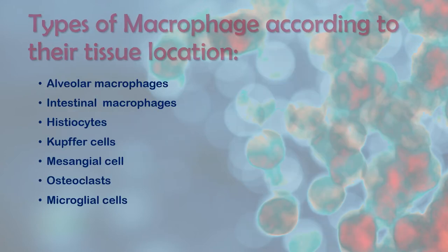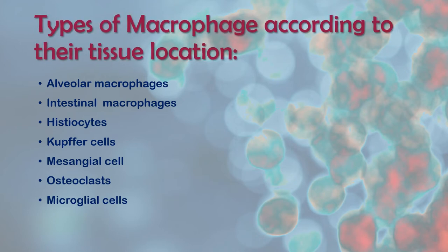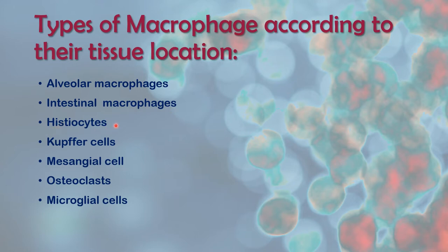There are different types of macrophages present in our body, named according to their tissue location. These types include: alveolar macrophages, present inside the lungs; intestinal macrophages, present inside the gut; histiocytes, present inside the connective tissue; Kupffer cells, present in the liver; mesangial cells, present in the kidney; osteoclasts, present in the bones; and microglial cells, present inside the brain.